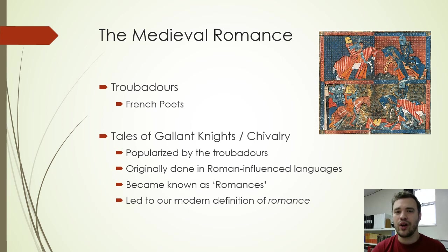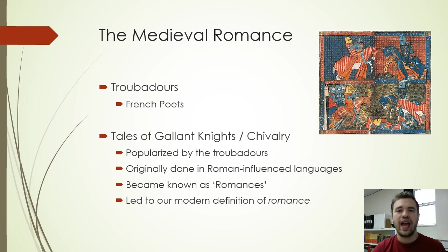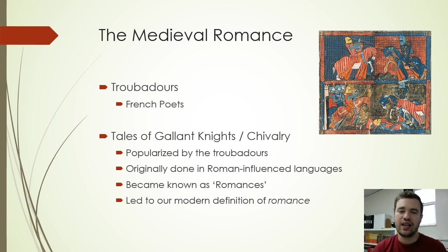The medieval romance was popularized by a group of poets called troubadours. They were French poets who first began to write stories about gallant knights and their chivalric deeds. The medieval romance is really just stories about knights and their deeds of chivalry. The troubadours were traveling poets who traveled around France and would often work for a few nights at the court of a wealthy noble or king, telling the stories they had to tell. They began to compose these medieval romances because knights were such an important part of medieval society.